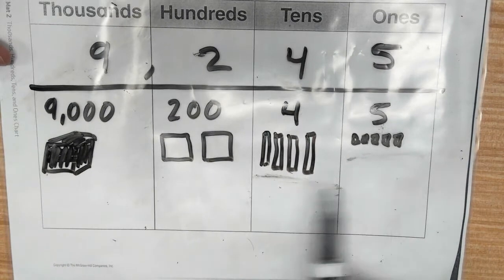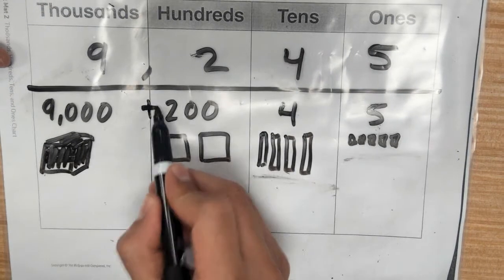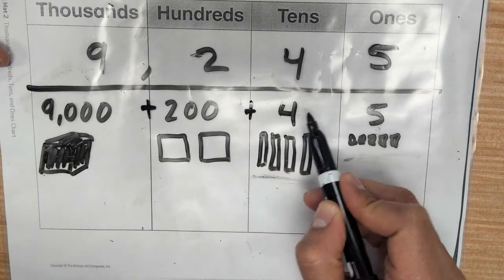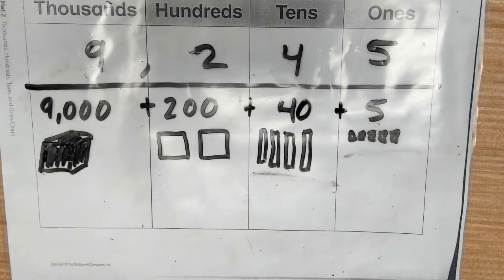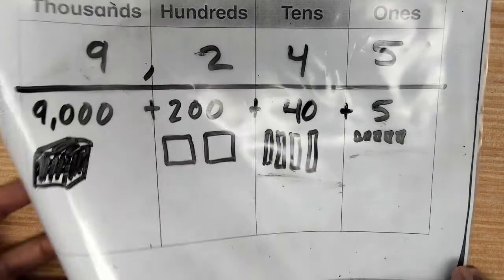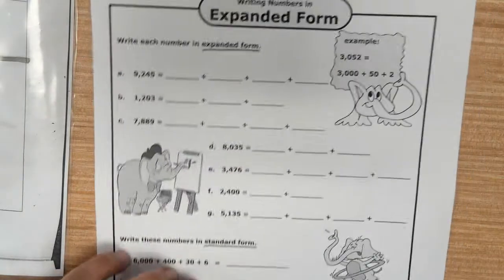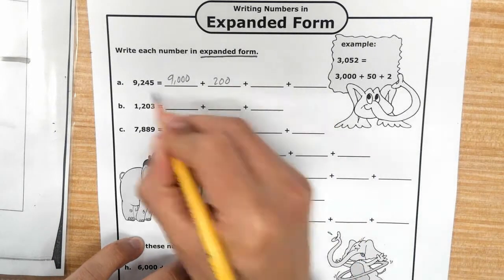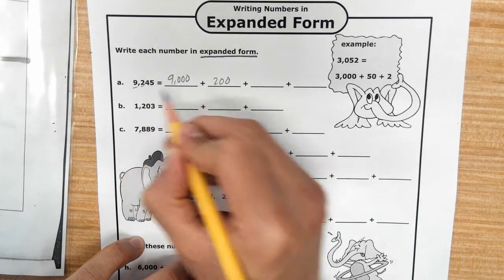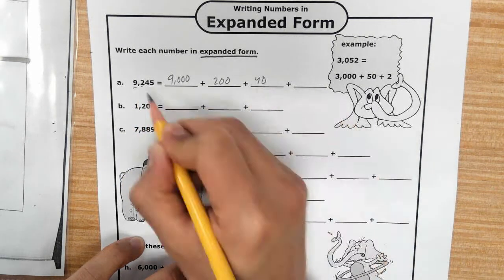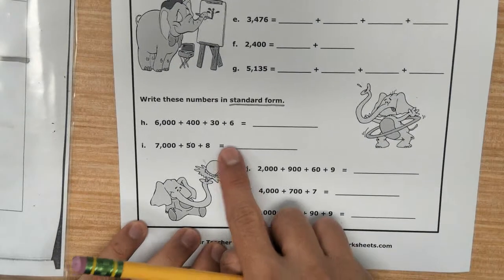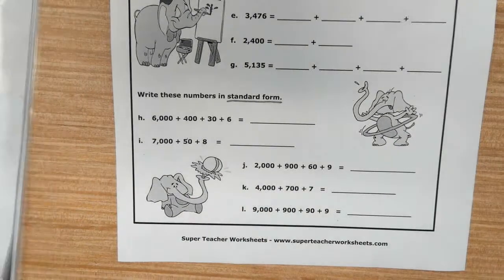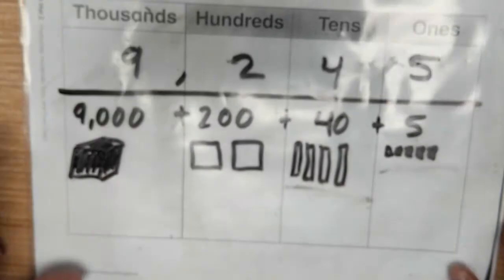So you have this as your answer. Then you're going to add it: nine thousand plus two hundred plus four tens — forty — plus five. Ten, twenty, thirty, forty. So now I write my answer: nine thousand plus two hundred plus forty plus five ones. That's how we do that example. Now we're going to go to one of the ones from the bottom.